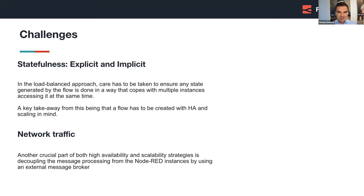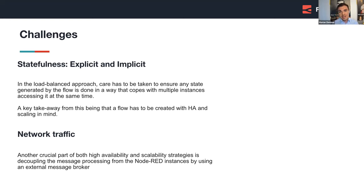The second challenge was network traffic management. For HTTP and MQTT — two common event sources — we faced distinct issues. HTTP needs to be load balanced via proxy to distribute requests, while MQTT requires shared subscriptions, which was introduced in MQTT version 5. This requires proper configuration to distribute messages between clients. So when creating and editing a flow, we also have to think about the network traffic.